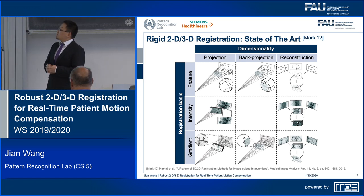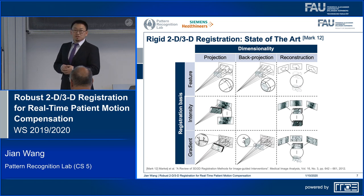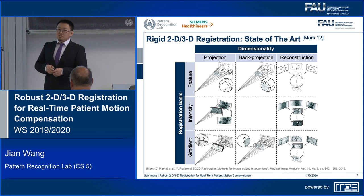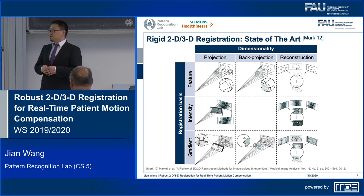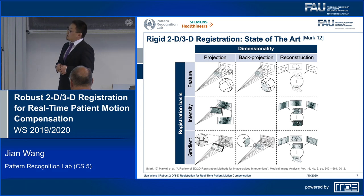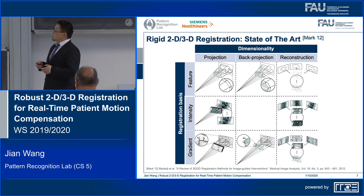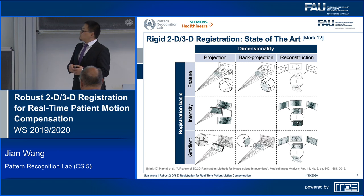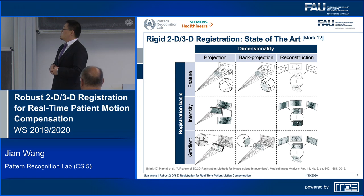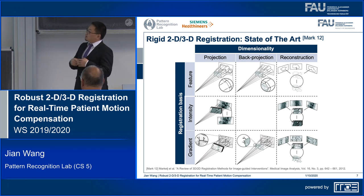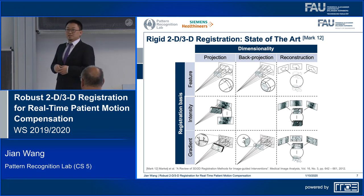There's a very nice review article summarizing the 2D-3D registration methods. For rigid 2D-3D registration, you can categorize the methods according to the dimensionality — projection-based, back-projection-based, and reconstruction-based methods. We can also categorize the registration methods according to the registration basis for the similarity measure: feature-based, intensity-based, and gradient-based.